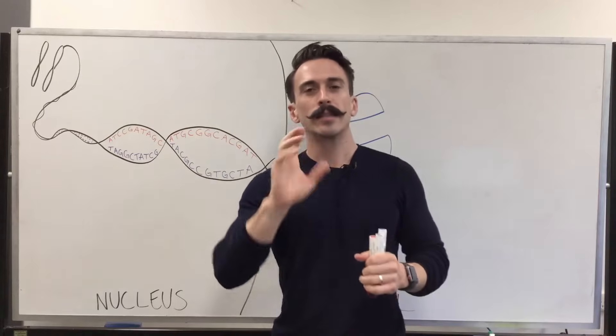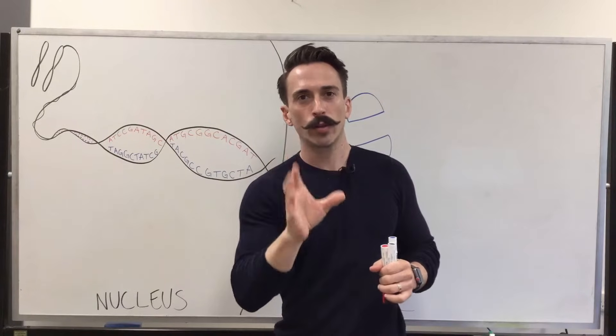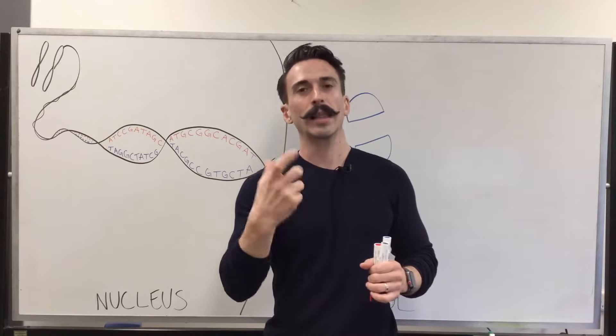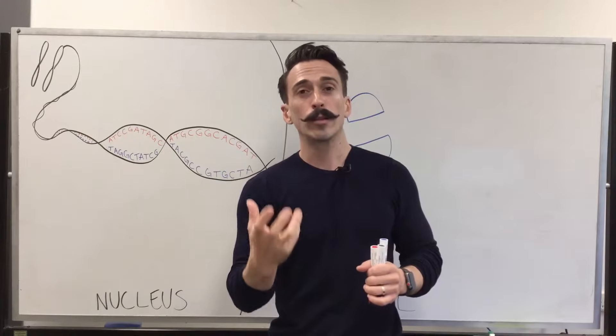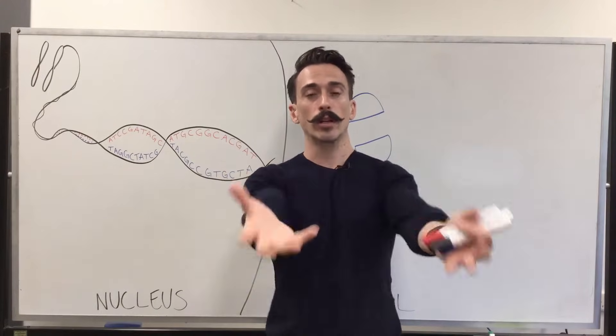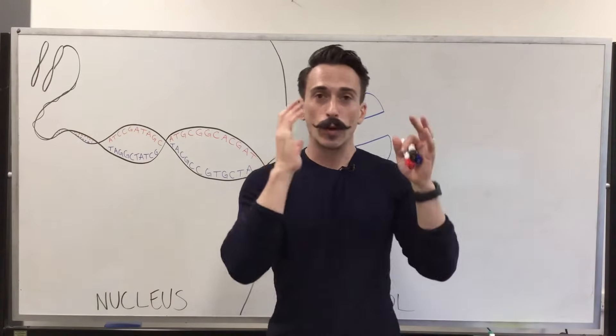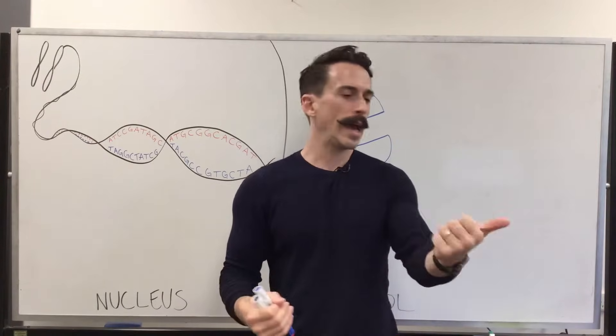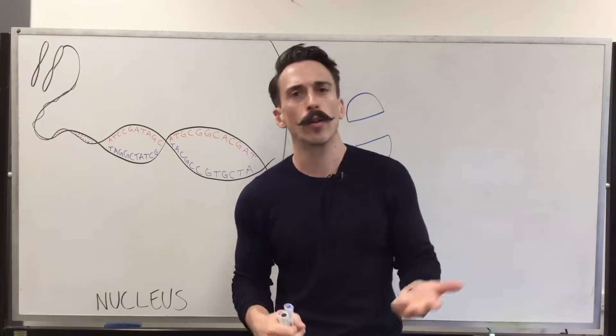Now DNA sits within every one of our 30 trillion cells except our red blood cells, and it is our genetic blueprint. It allows for our body to be able to make all the stuff that makes you look like you and me look like me. So it creates proteins. Proteins do all the functional stuff. They're enzymes, they carry molecules, they can be neurotransmitters.